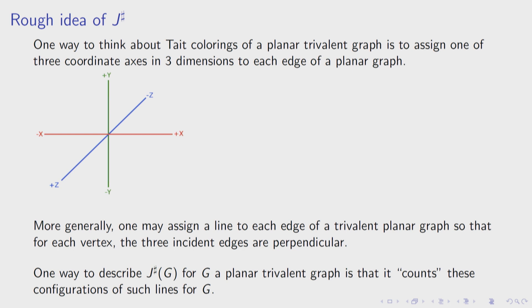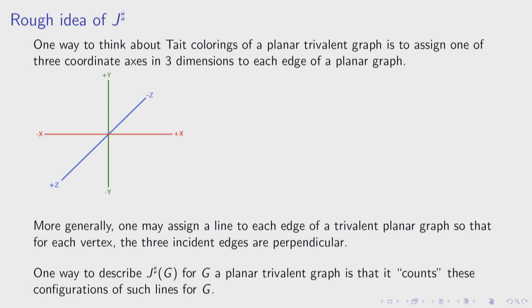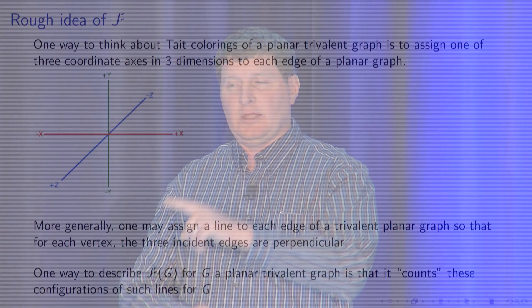They thought of colorings instead as assigning three axes — coordinate axes which are perpendicular to each other in ℝ³ — and you can think of a Tait coloring that way. More generally, they assigned configurations of lines in ℝ³ which were perpendicular to each other at each vertex. They counted these in a careful way, making use of technology from gauge theory and knot theory, and showed the non-triviality of this.